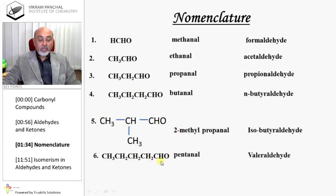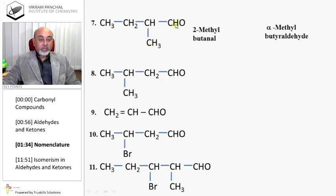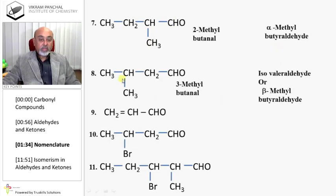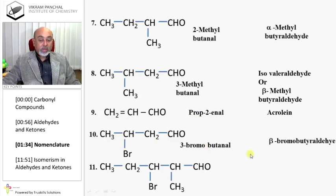All five carbons in a straight chain gives pentanal, or valeraldehyde. Here a methyl group is present on the second carbon, so it is 2-methylbutanal, or alpha-methylbutyraldehyde. This is 3-methylbutanal, or isobutyraldehyde, or beta-methylbutyraldehyde. Here there is a double bond, so it is known as prop-2-enal, or acrolein.